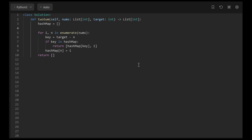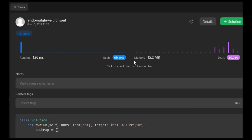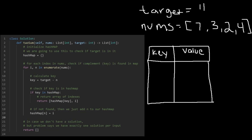We run the code and it should be good to go — a very efficient solution. Now let's walk through an example with some comments added for clarity. The hash map is already initialized. We iterate through nums: our target is 11 and the first element is seven, so 11 minus seven equals four. Four is not a key in the hash map, so we add key seven with value zero. Next is three: 11 minus three equals eight — not in the hash map, so we add key three with value one.